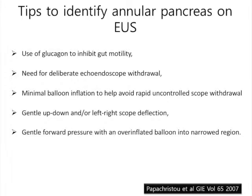These are a few tips to identify annular pancreas on endoscopic ultrasound. Glucagon may be required to inhibit gut motility. For examination of annular pancreas,